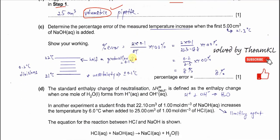Part c: determine the percentage error of the measured temperature increase. This is the delta T. To get delta T we must use two values — initial and final — so we read the thermometer twice. When the first 5 cm³ of NaOH is added, this is the first addition.